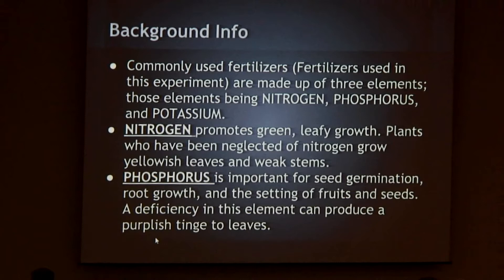Nitrogen promotes green leafy growth. Plants that have been deprived of nitrogen grow yellowish leaves and usually have weak stems. Phosphorus is important for seed germination, root growth, and the setting of fruits and seeds. A deficiency in this element can produce a purplish tinge to leaves.